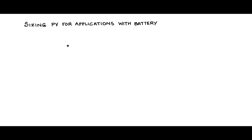Let us see how we go about sizing PV for applications with battery. We had already looked at sizing PV for applications without battery. Now, along with battery, what are the modifications and extensions that we need to do in order to select the size of the PV panels? The first step would be to determine the load profile, which will give us an entire picture of the watt-hour requirement for sizing the PV and also the battery.